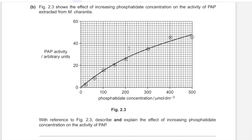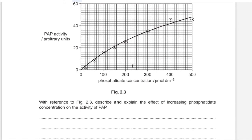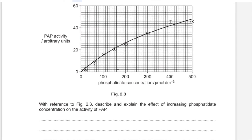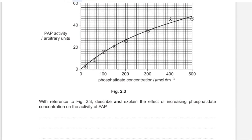For questions requiring you to describe and explain graphs relating enzyme activity to substrate concentration, write down every detail regarding enzyme mechanism related to substrate concentration and also the major points describing the graph. Given that this question is only 4 marks, you never know exactly what the marking scheme requires.